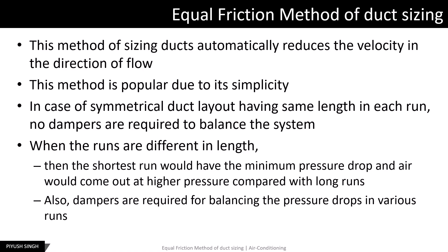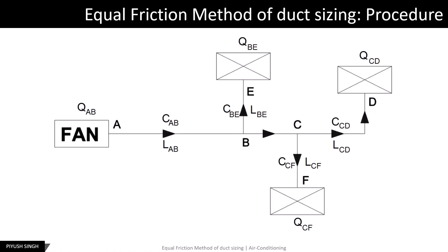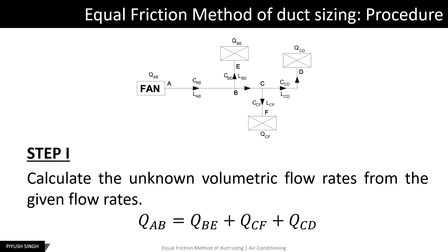Dampers are required for balancing the pressure drop in various runs. This method is not very popular in systems with very long runs. In step 1, the unknown volumetric flow rates are calculated from the given flow rates. The discharge from the fan will be equal to the sum of the air supplied to the different zones due to continuity. Therefore, in this system, Q_AB is equal to Q_BE plus Q_CF plus Q_CD.